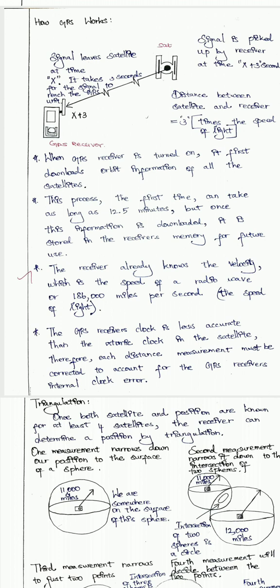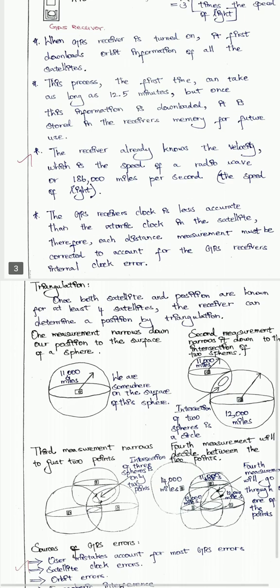The distance between the satellite and the GPS receiver unit is calculated as velocity multiplied by time — that is, the velocity of the transmitted signal multiplied by the time it takes to reach the receiver. The GPS receiver also already knows the velocity, which is the speed of a radio wave, or 186,000 miles per second. The GPS receiver's clock is less accurate than the atomic clock, so each distance measurement must be corrected to account for the GPS receiver's internal clock.